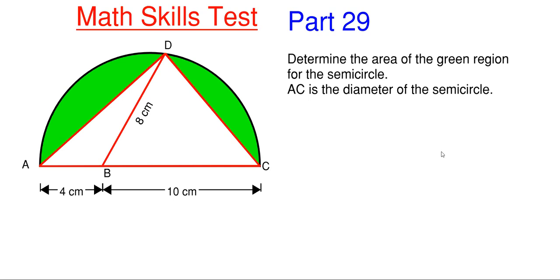This is the 29th part in this series. What we have here is we need to determine the area of the green region for the semicircle. We're told that A to C is the diameter of our semicircle, A to B is 4 centimeters, B to C is 10 centimeters, and B to D is 8 centimeters.